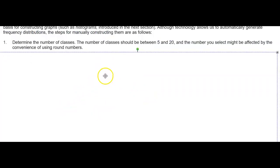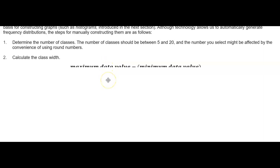determine the number of classes. The number of classes should be between 5 and 20, and the number you select might be affected by the convenience of using round numbers. Number two, you want to calculate the